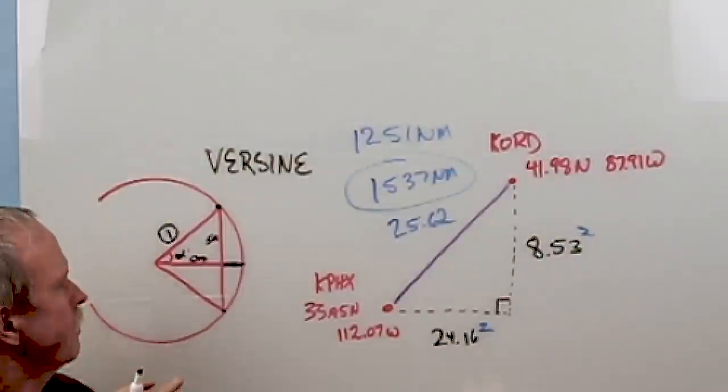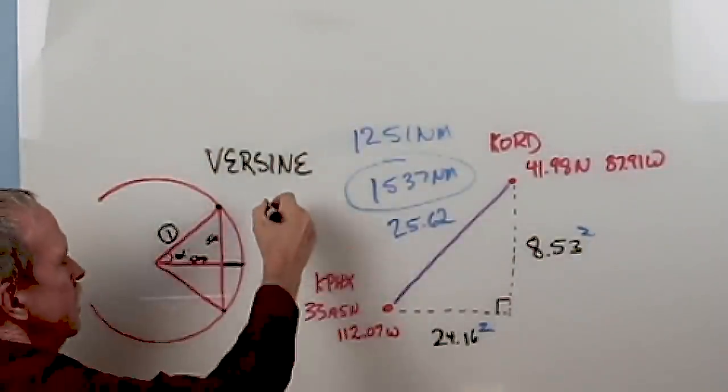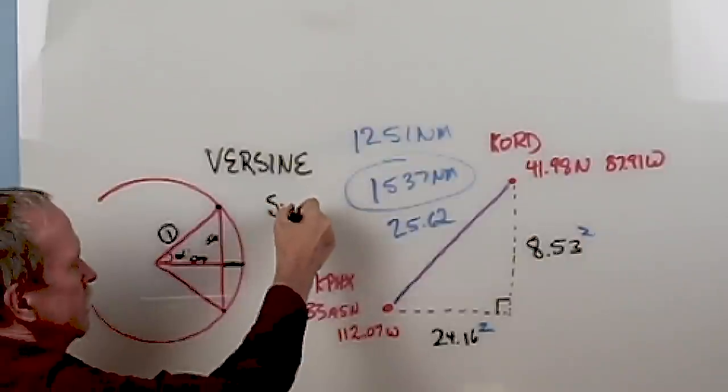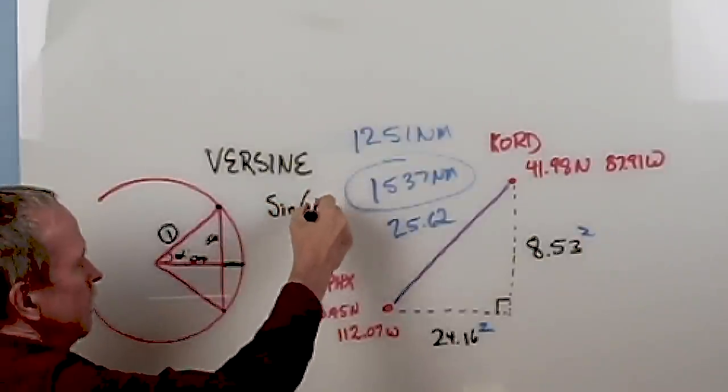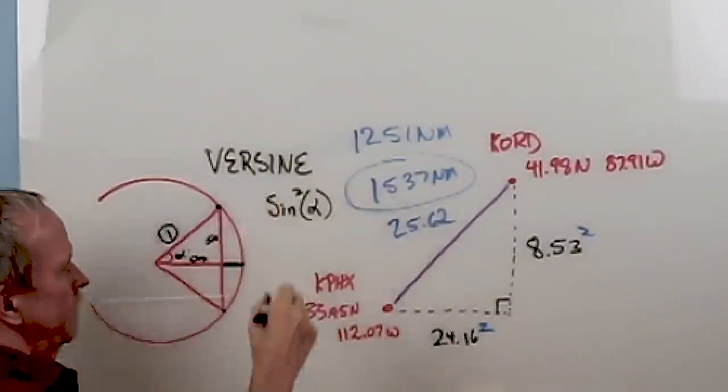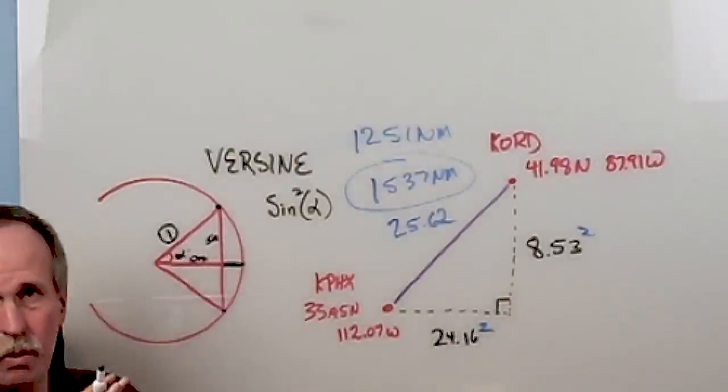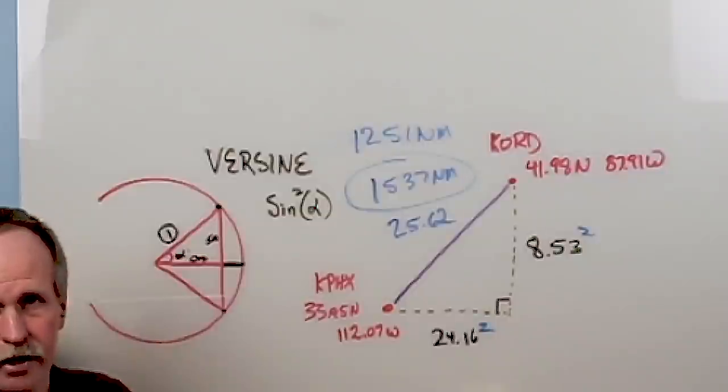Now, the formula for a versine is the sine of the angle squared. But wait, there's more. We're not going to really talk about the versine.